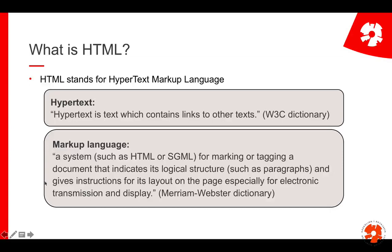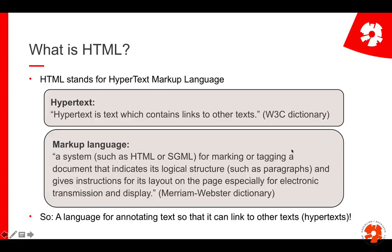Other markup languages you might know are, for example, Markdown, where you can indicate what is a paragraph, what is a list, and so on — or the languages used for editing text in wikis is similar. If you have never worked with HTML or anything similar, you will see what it means to tag something. Altogether, this is a language that helps you write text and annotate it so that you can link to other texts.